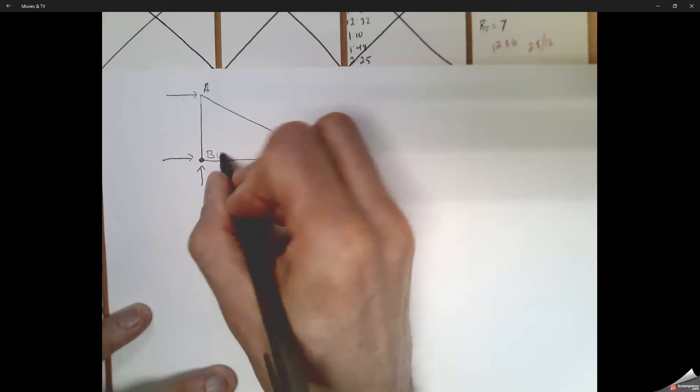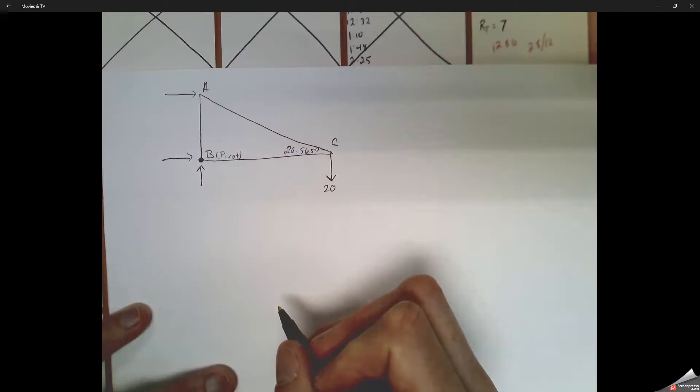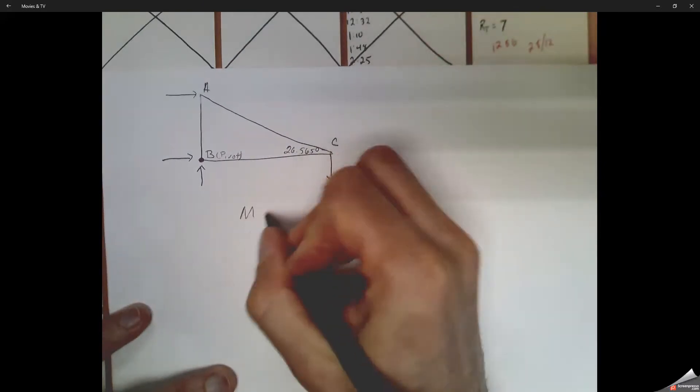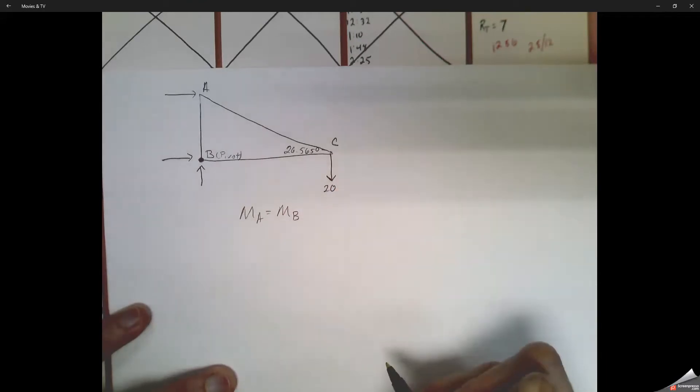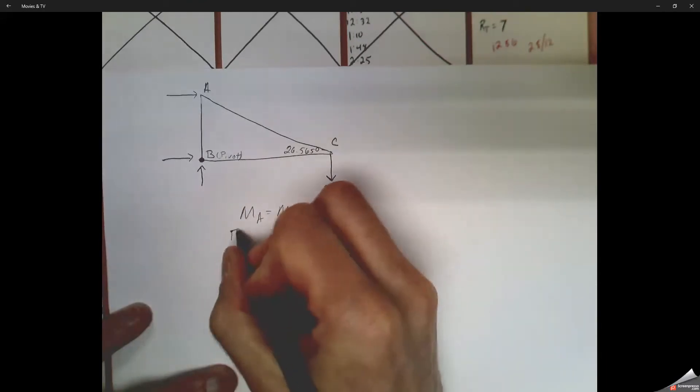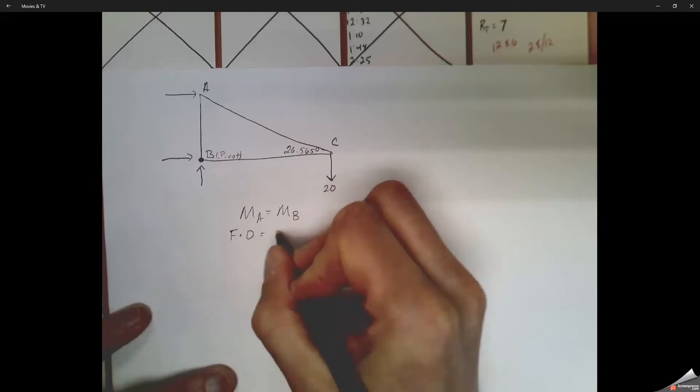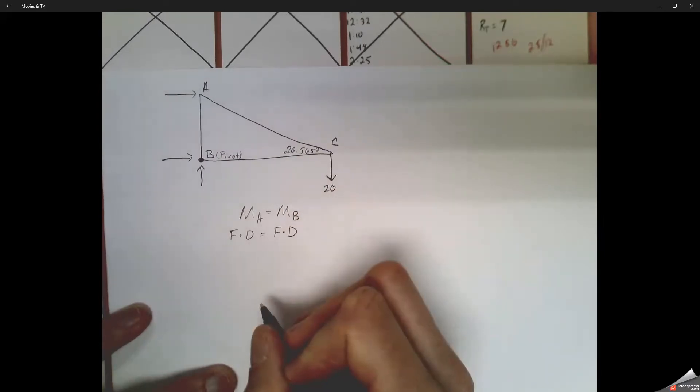We're going to start at pin A or B being the pivot point itself, as if we're putting our finger on B and everything's going to rotate. So C is pulling it clockwise and A then is going to have to be pulling counterclockwise to fight that. So the moment at A needs to equal the moment at B. So moment is force times distance equals force times distance.